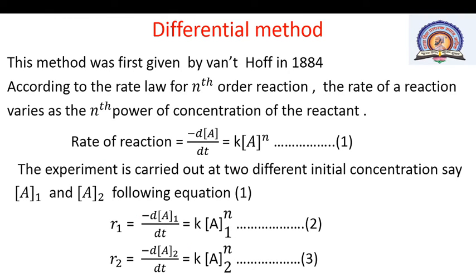The last method is the differential method, first given by scientist Van't Hoff in 1884. According to the rate law for an nth order reaction, the rate of reaction varies as the nth power of the concentration of the reactant. The rate of reaction is: −d[A]/dt = k·[A]^m. The experiment is carried out at two different initial concentrations.